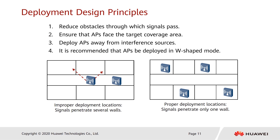Let's check the principles required for deployment design. First, minimize the number of obstacles through which signals pass. Second, ensure that APs face the target coverage area. Third, deploy APs far away from interference sources. Finally, deploy APs in W-shaped mode, which is recommended for areas with rooms as well as large open areas.